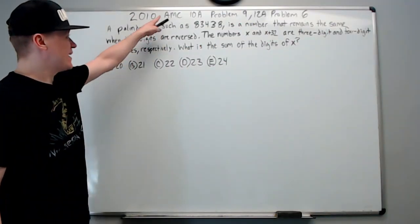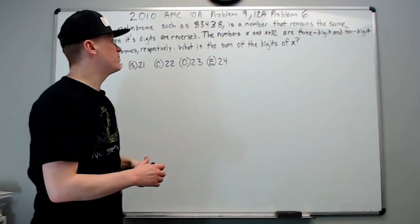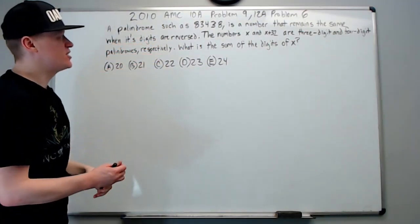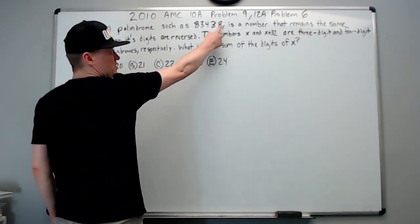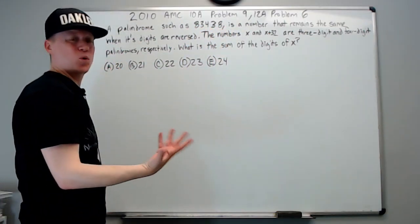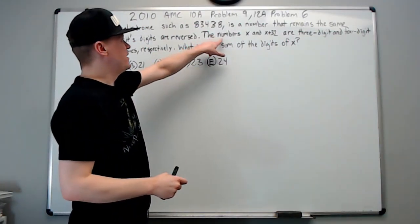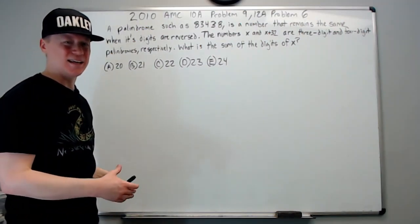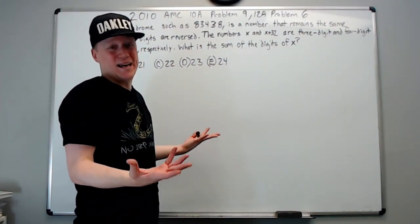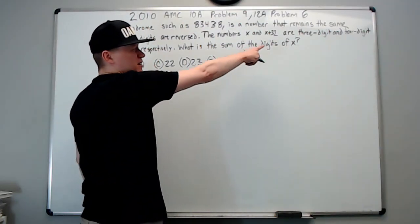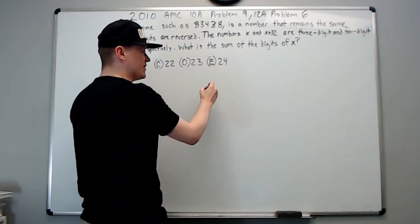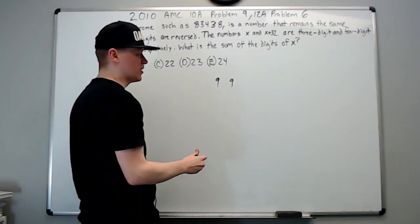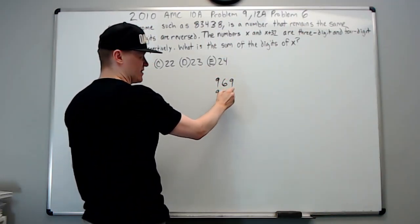Continuing on with 2010 AMC 10A problem 9. A palindrome, such as 83438, is a number that remains the same when its digits are reversed. The numbers x and x plus 32 are three-digit and four-digit palindromes respectively. If you're going from three digits to four digits by adding 32, the three-digit number must be in the 900s. So it must go 9 blank 9. Furthermore, it must be within 32 of going over a thousand. You've got 969, 979, 989, and 999. Try adding 32 to the first one. This is 31 away from a thousand, so add one more to get 1001. That's a four-digit palindrome. This must be x.